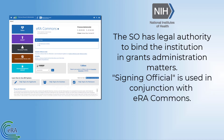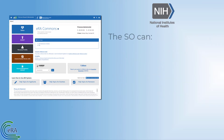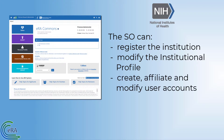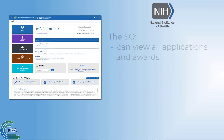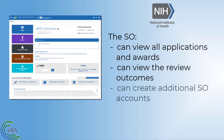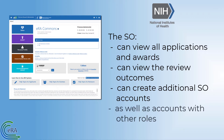The label "signing official" is used in conjunction with the NIH ERA Commons. The SO can register the institution, modify the institutional profile, create, affiliate, and modify user accounts, and is responsible for the submission of required reports. The SO can view all applications and awards within the institution, including status and award details, and can view the review outcomes of an application. An SO can create additional SO accounts, as well as accounts with any other role or combination of roles.